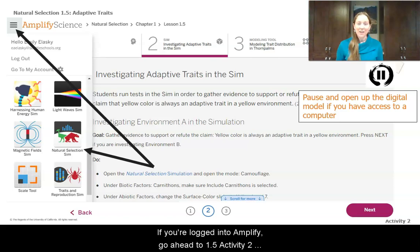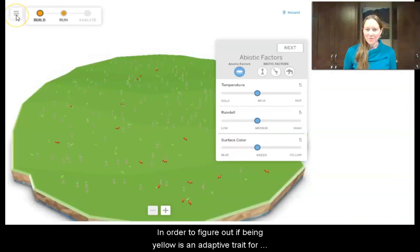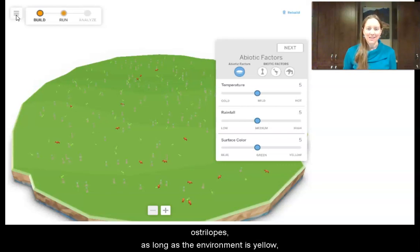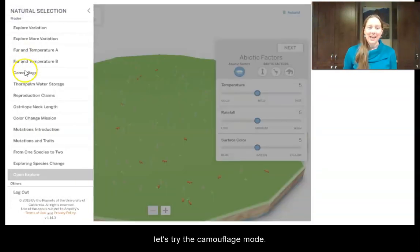If you're logged into Amplify, go ahead to 1.5 Activity 2, page 2, and launch the sim. Let's find out what happens to our ostrilopes. In order to figure out if being yellow is an adaptive trait for ostrilopes, as long as the environment is yellow, let's try the camouflage mode.